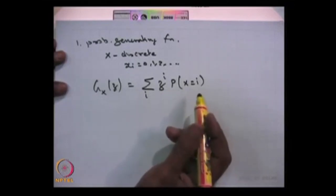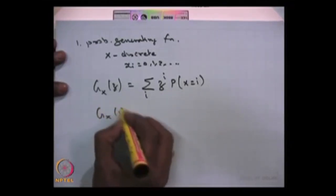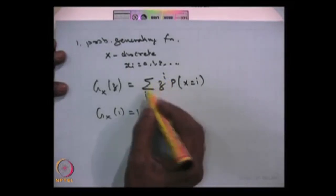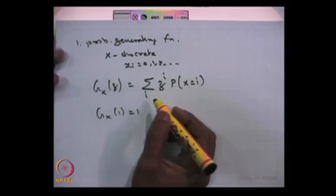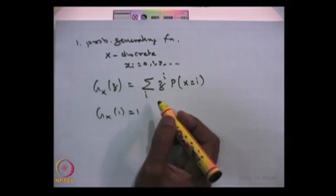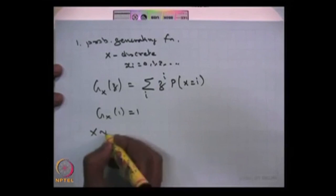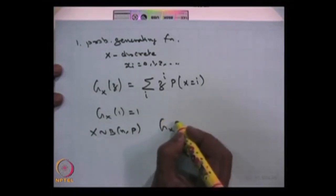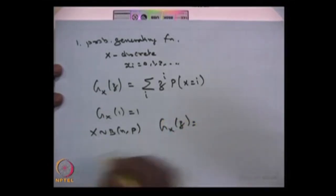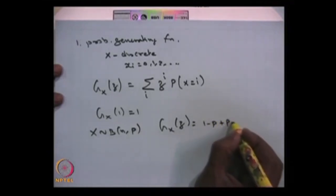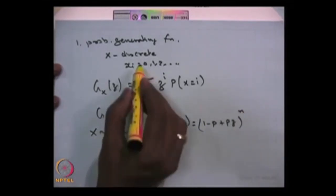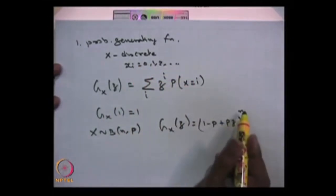This series is going to always converge, and you can find out that the value at Z=1 is going to be 1. Since it involves Z power i, by differentiating you can get an easy formula relating the moment of order n with the nth derivative of the probability generating function substituting Z equal to 1. If X is a binomial distribution with parameters n and p, then the probability generating function is (1 minus p plus p times Z) power n, giving a polynomial of degree n.